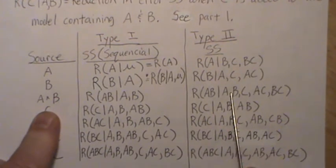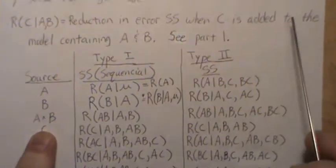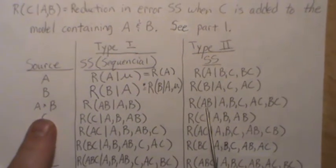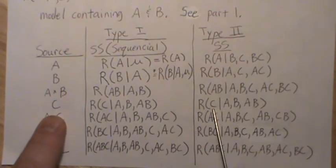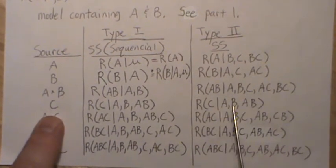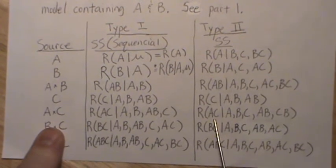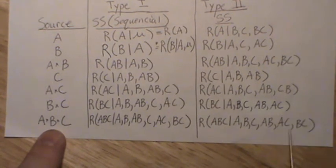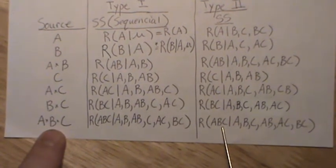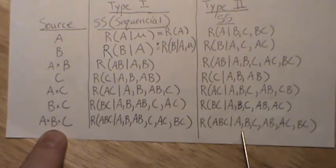For the AB interaction in type 2, it's every other term but no higher-order terms that contain A and B — so the three-way interaction is not added. For C, it's the reduction when C is added to the model already containing A, B, and the AB interaction. Since the three-way interaction is the highest-order term, its type 2 sum of squares uses every other term: A, B, C, AB, AC, and BC.